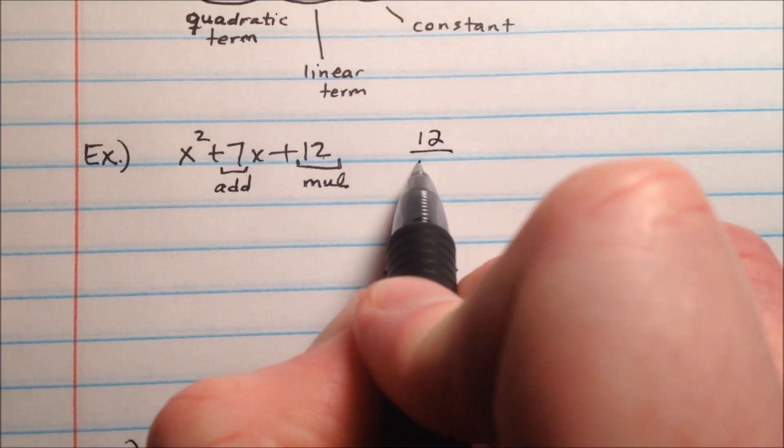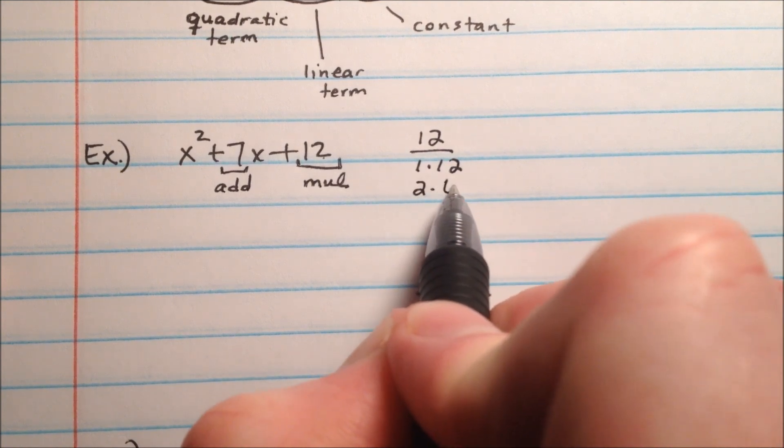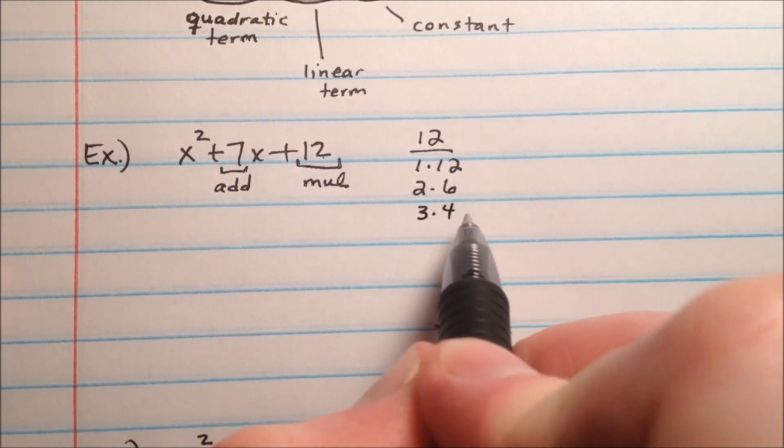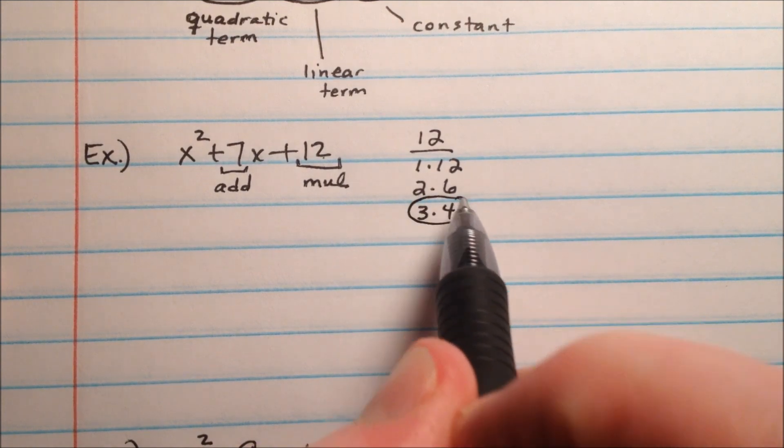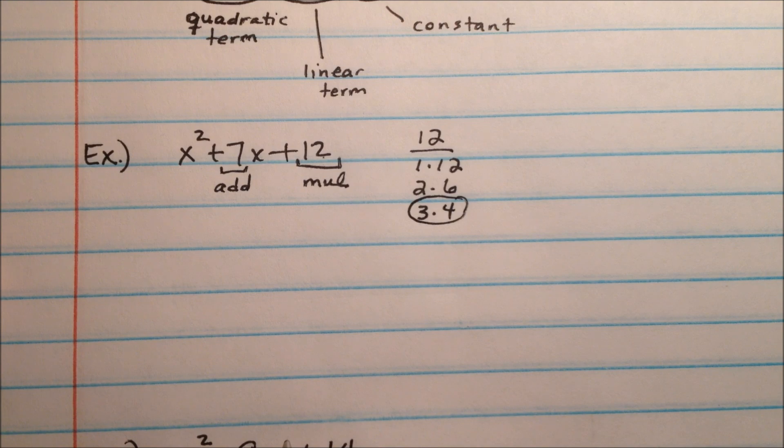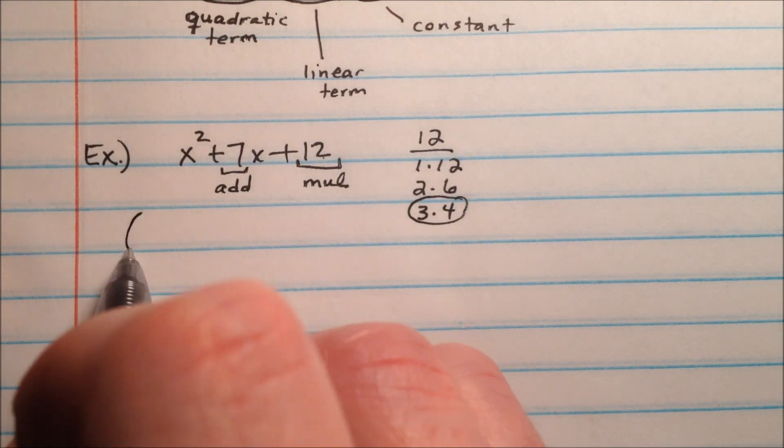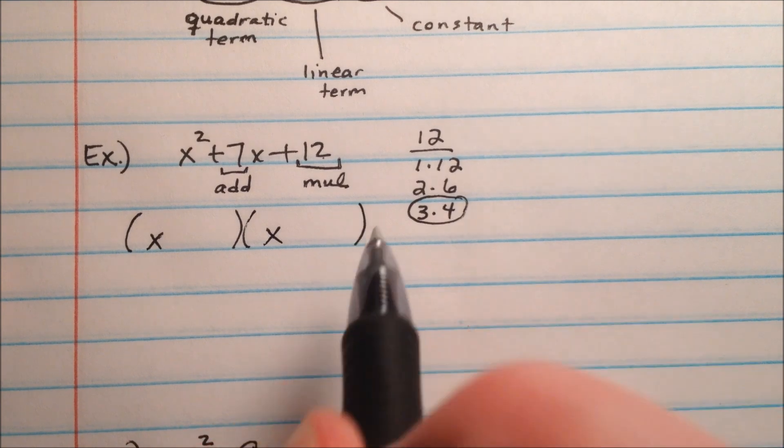So we need factors of 12 that add to 7. Our factors of 12 are 1 and 12, 2 and 6, 3 and 4. So do any of these add up to 7? Well, sure. This 3 and 4 will multiply to make 12 but add to make 7. So here is how we set these up and write these.